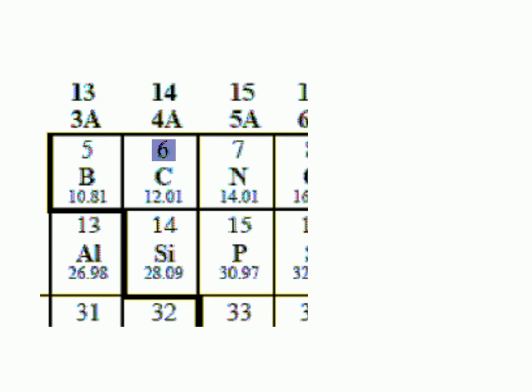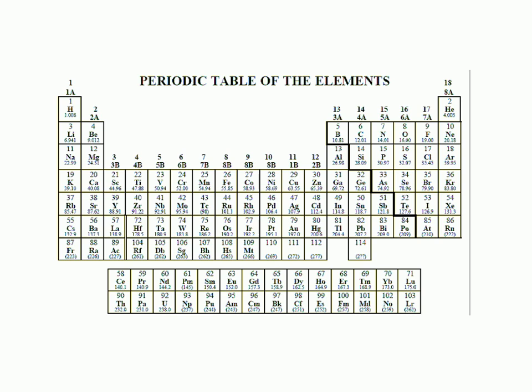Occasionally you get a periodic table that only has symbols for the elements but no numbers. You can still figure out the atomic number of any element because they are arranged in order of increasing atomic number from left to right and from top to bottom. So the atomic numbers are 1 for hydrogen, 2 for helium, 3 for lithium, 4 for beryllium, 5 for boron, 6 for carbon, and so on.